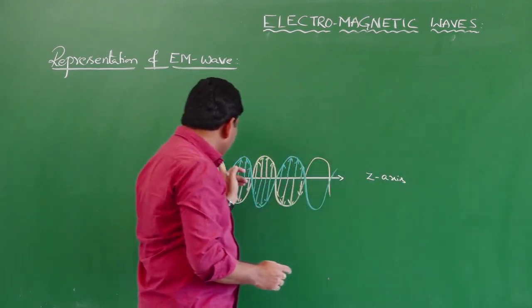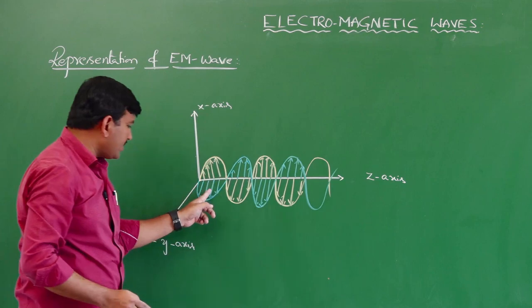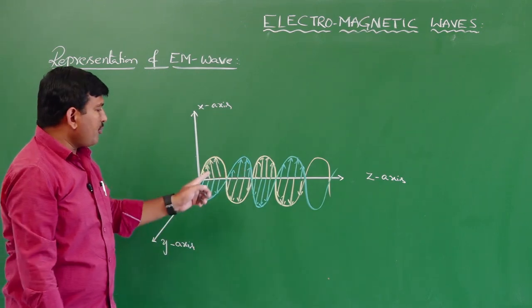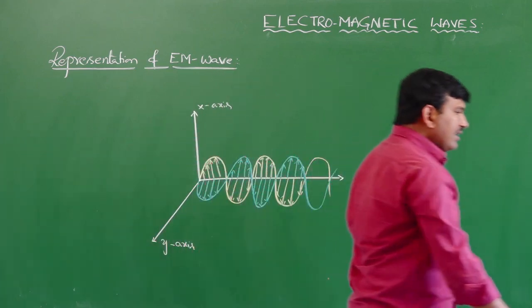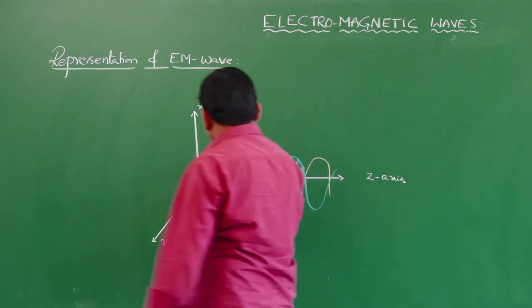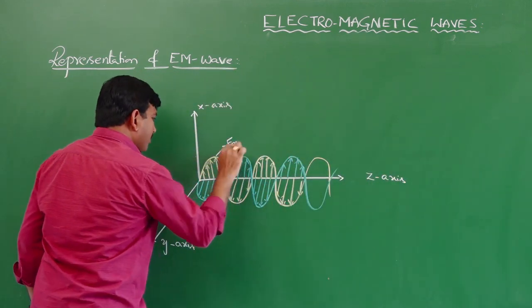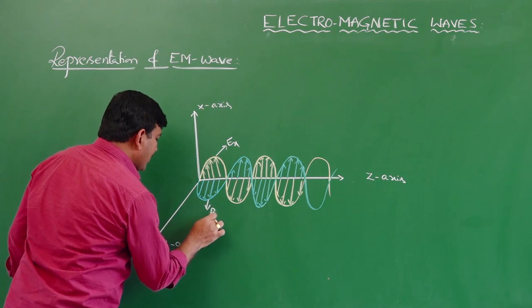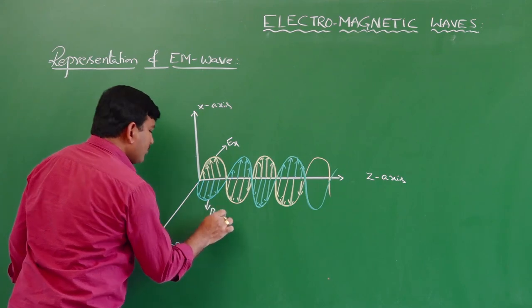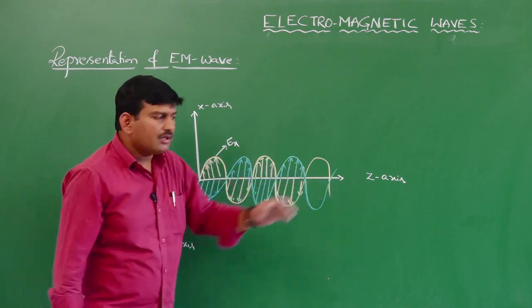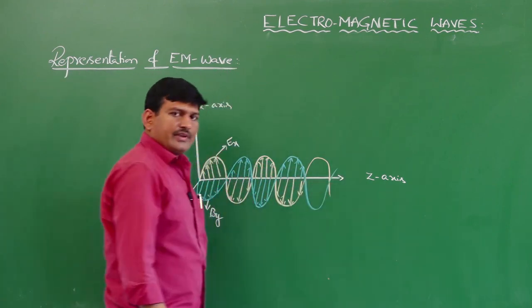In an electromagnetic wave, the electrical wave is perpendicular to the magnetic wave, and they are also perpendicular to the direction of propagation. Finally, an electromagnetic wave is one in which the electric vector and magnetic vector are mutually perpendicular to each other and also perpendicular to the direction of propagation of the wave.